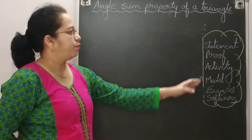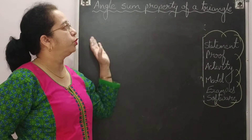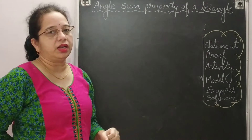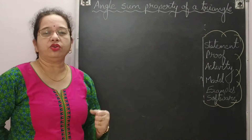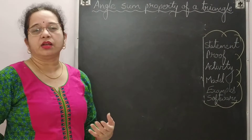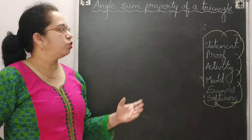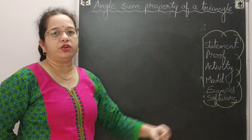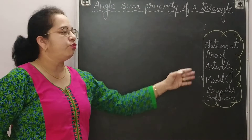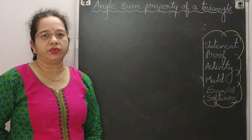In the next video, I will explain the activity — how we can prove this property by doing an activity. For the activity you will need colourful sheets, scissors, fevicol, pencil, and scale. Keep those things ready so you can enjoy and do it along with me. Don't forget to watch the next video. Thank you for watching today's video.